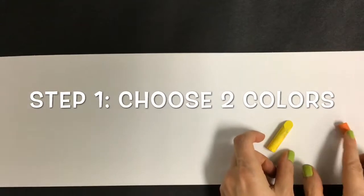Step number one for creating a beautiful chalk background is to pick two colors next to each other on the color wheel, like orange and yellow. When you pick two colors that are next to each other, you're always going to get a beautiful blended background.